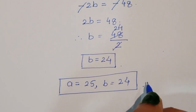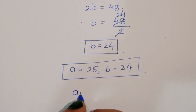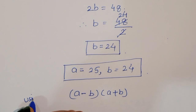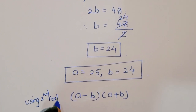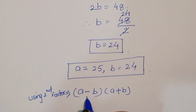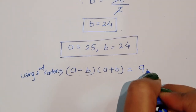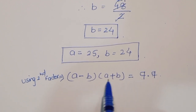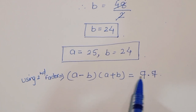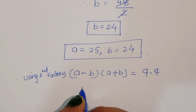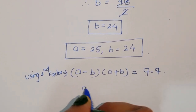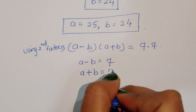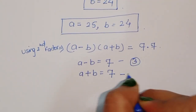Now we use the second factor pair: a minus b times a plus b equals 7 times 7. Since a minus b equals a plus b here, we have a minus b equals 7 and a plus b equals 7. This also satisfies the condition. We label these equation 3 and equation 4.